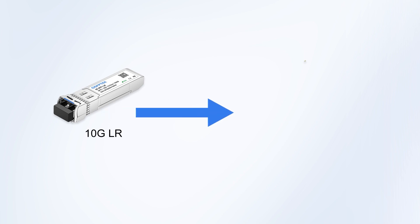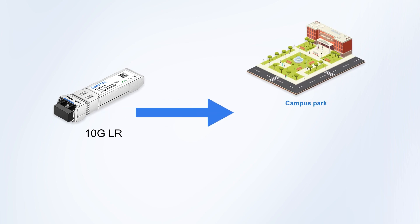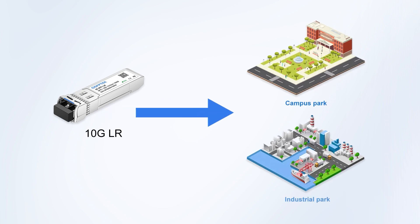Meanwhile, the 10G-LR module is ideal for connecting buildings across a campus or industrial park, and can even be used in metropolitan area networks.